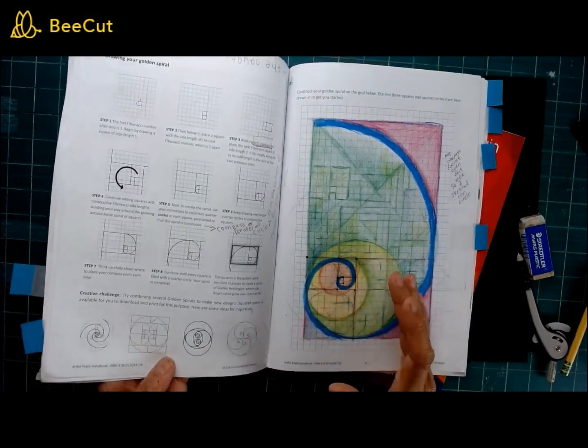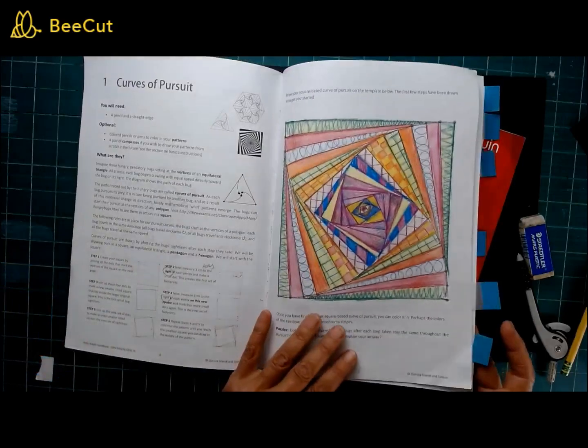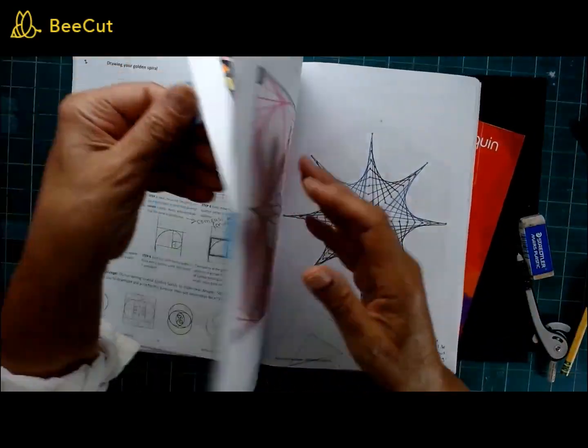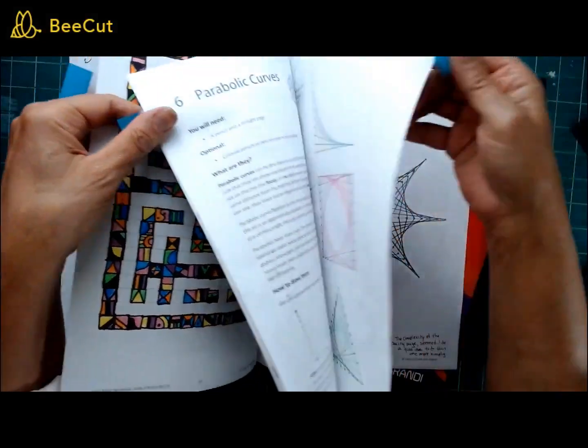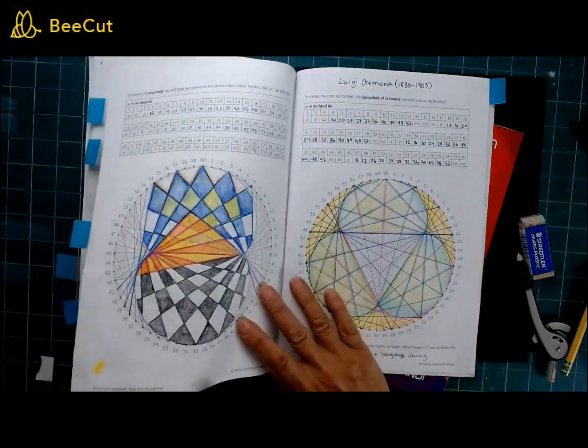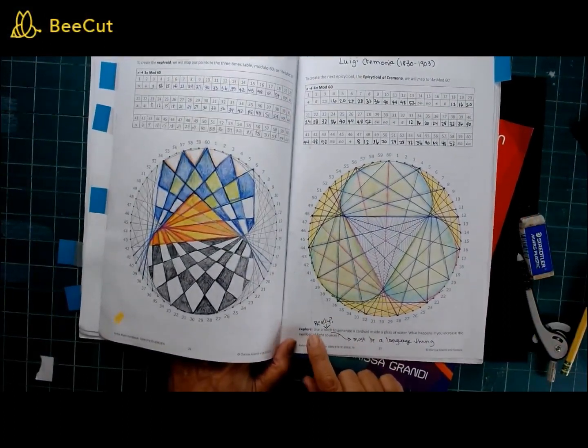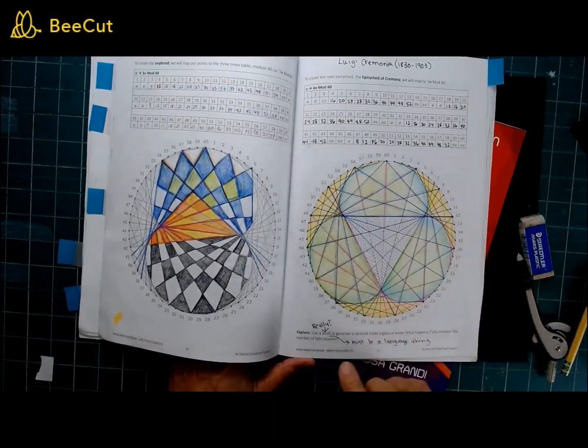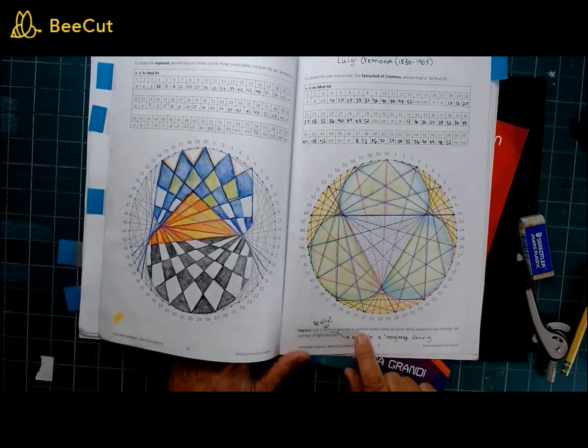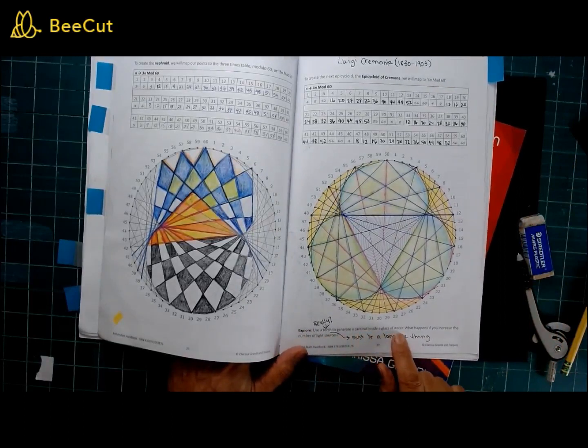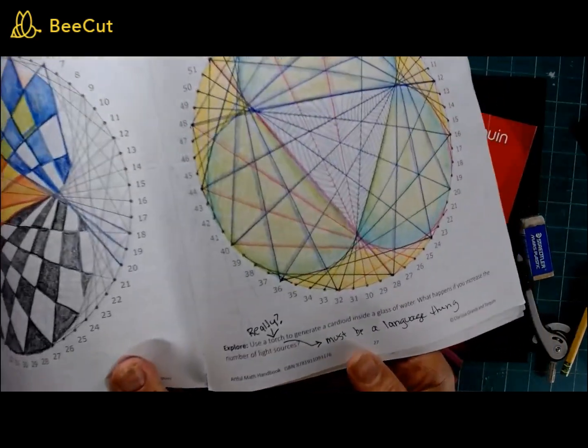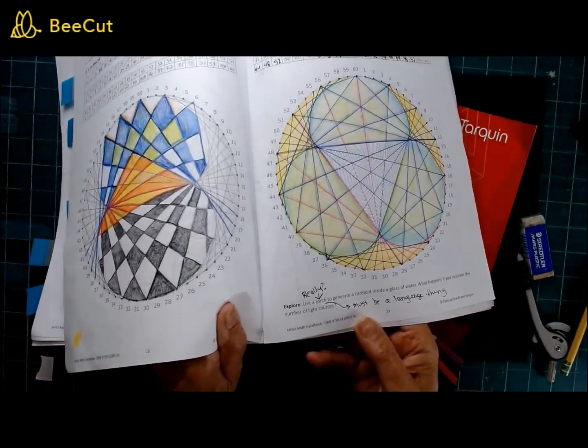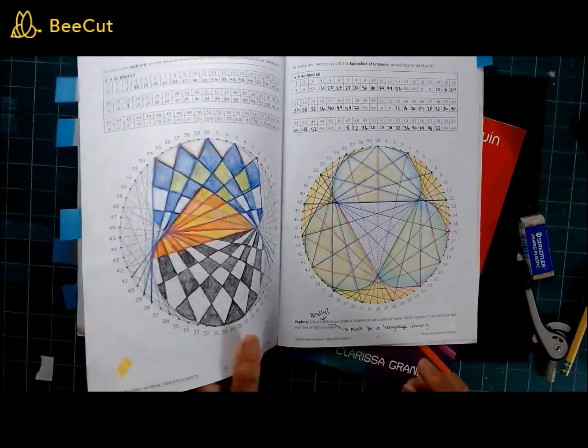Okay, so I was working backwards up to here, but now I went forward, but I wanted to point out something. In the epicycloid section, this was one of the funniest things about the English American divide. Down here it says to explore, use a torch to generate a cardioid inside a glass of water. I just wanted to let Clarissa know that in this country we generally don't recommend children to use torches. I think she meant flashlight, but I thought that was quite funny.